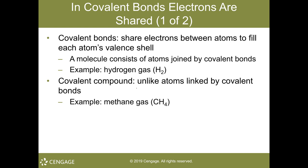Those numbers give you the number of valence shell electrons. Boron has three valence shell electrons; carbon has four; nitrogen has five; oxygen has six; fluorine has seven. Helium and the rest of those noble gases in blue in your lab manual have eight valence electrons.